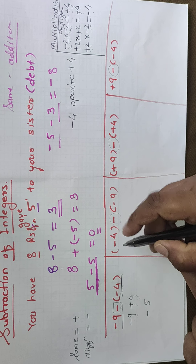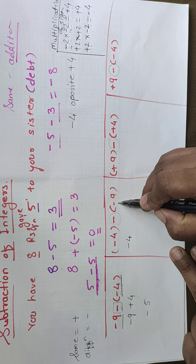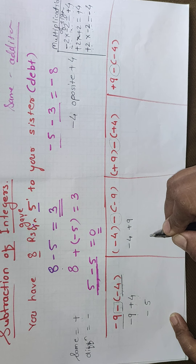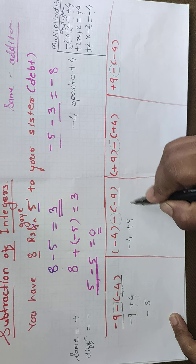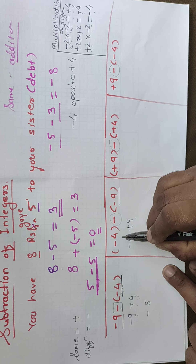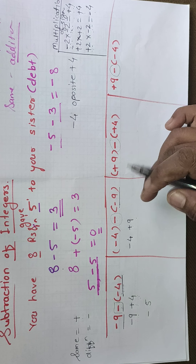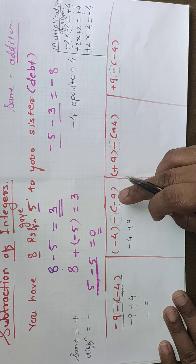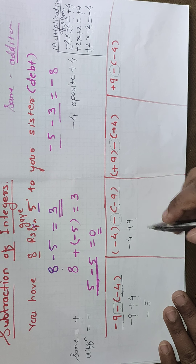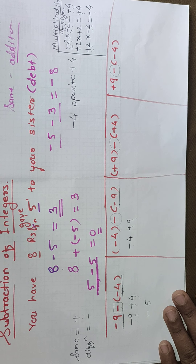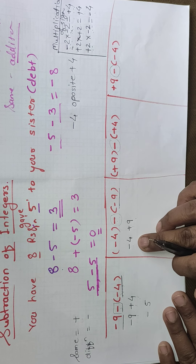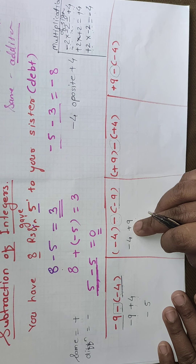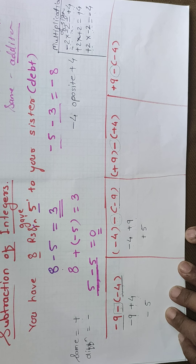Now the next question: minus 4 minus (minus 9). Signs are same — both negative — so we put plus sign, giving minus 4 plus 9. Signs are now different, so bigger number minus smaller number: 9 minus 4 equals 5, and the bigger number is positive 9, so the answer is plus 5.